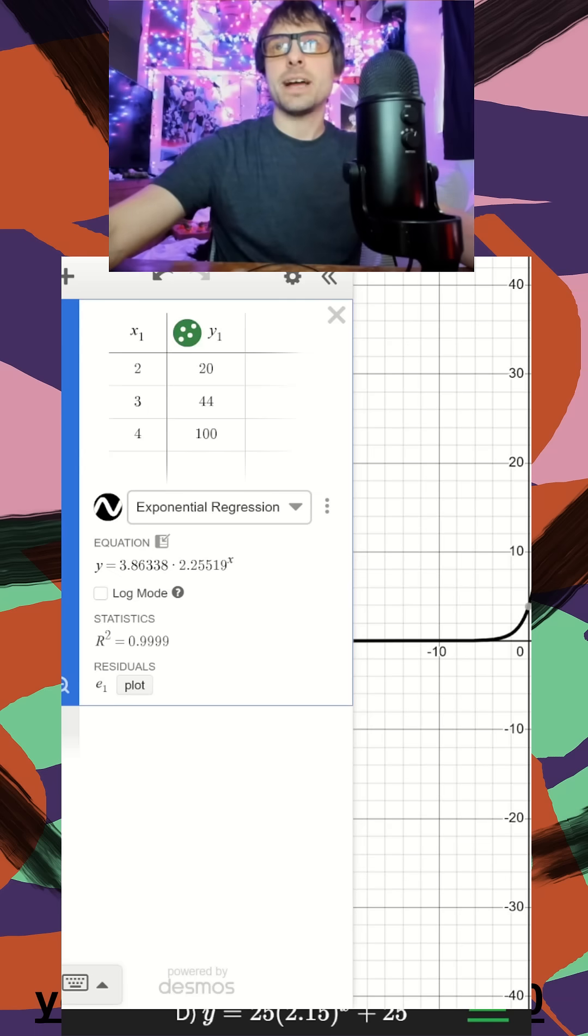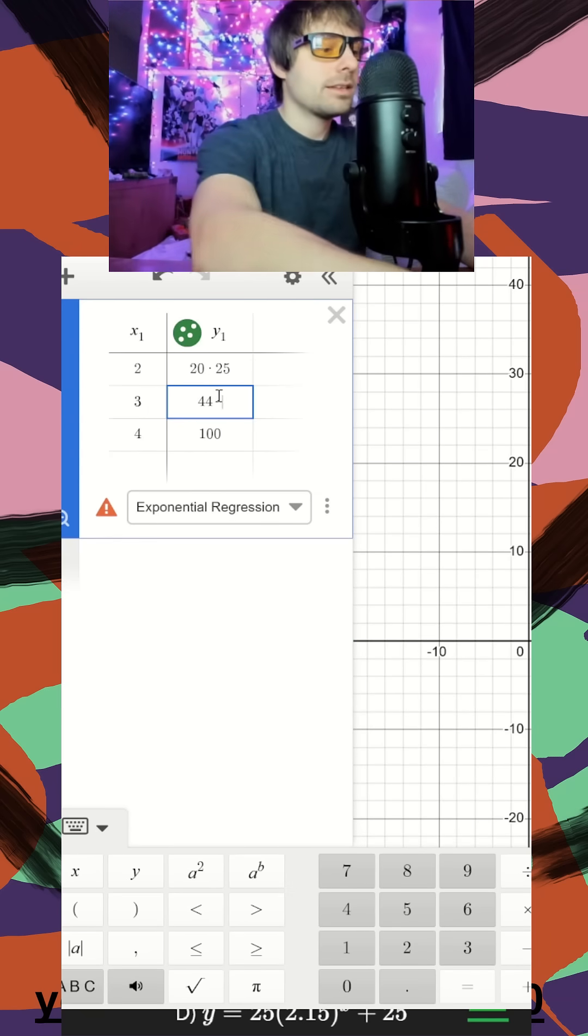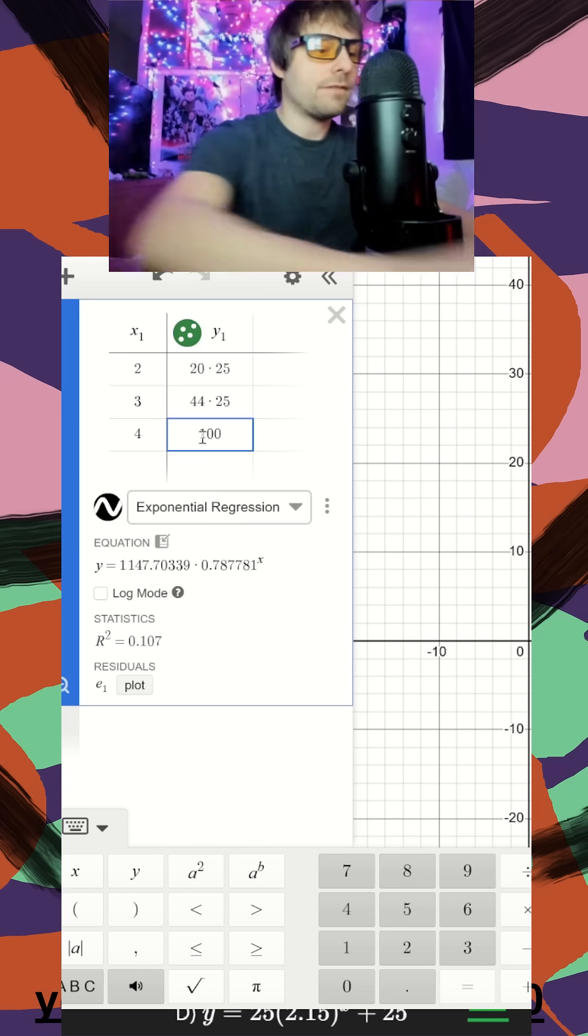All I have to do is jump back to my table and multiply each y value by 25, times 25, and finally times 25.